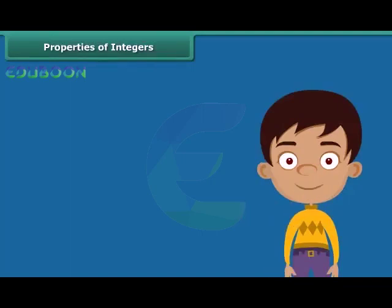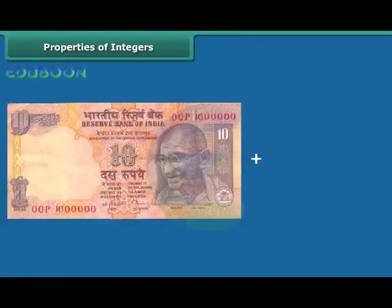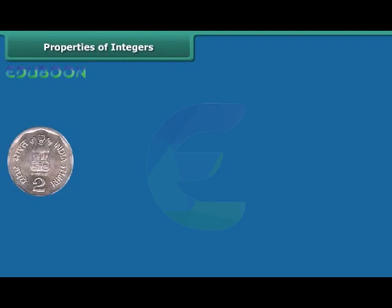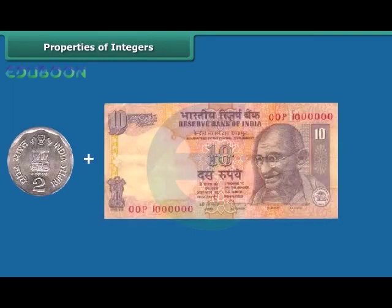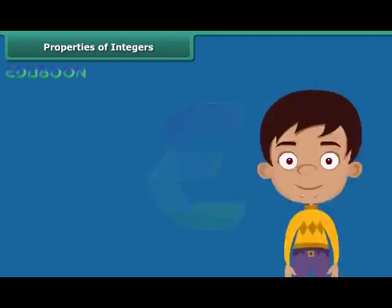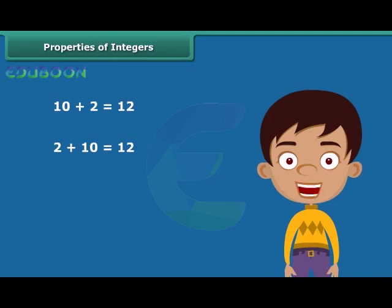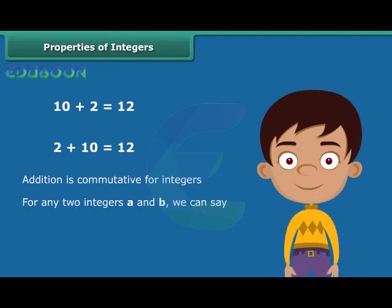Let us now move towards another property — the commutative property. This is a 10-rupee note. If we add one coin of 2 rupees, we get 12 rupees. Now take a coin of 2 rupees and add one note of 10 rupees — again we get 12 rupees. So 10 plus 2 equals 12, and 2 plus 10 equals 12. In both cases we get the same answer. Hence, addition is commutative for integers. In general, for any two integers A and B, A plus B is equal to B plus A.